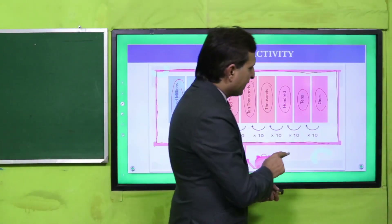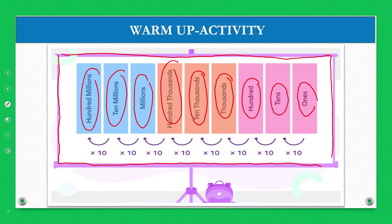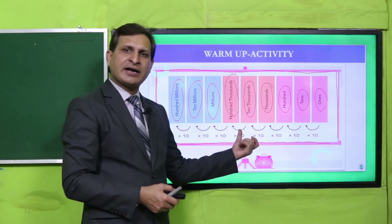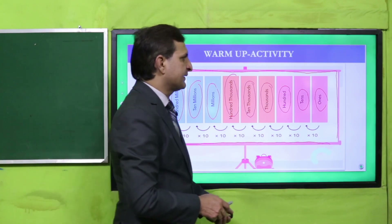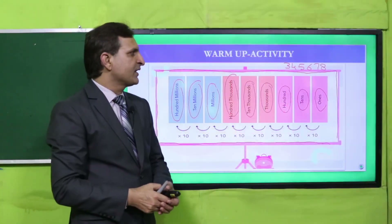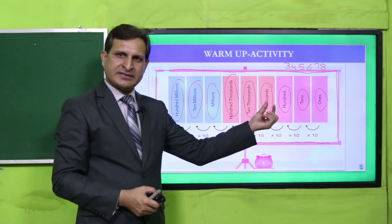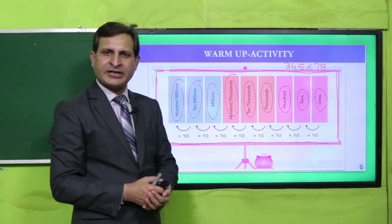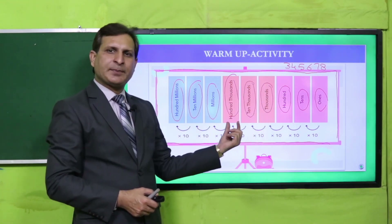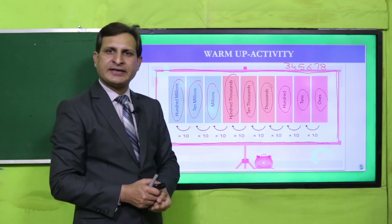अब जैसा कि ones के ऊपर कोई भी number हो सकता है — you can write any number of your choice. फिर उस number को place value chart के अंदर हर place के अंदर write कर देना है। जैसा कि मैंने एक number write किया: 345678 — यह एक six digit number है। इसी तरह आप अपनी मर्जी से कोई भी number notebook पर write करें और हर digit को उसकी particular place में लिख दें।